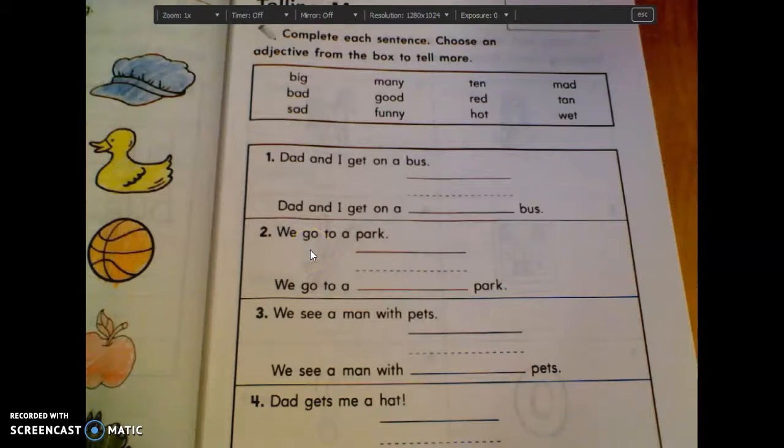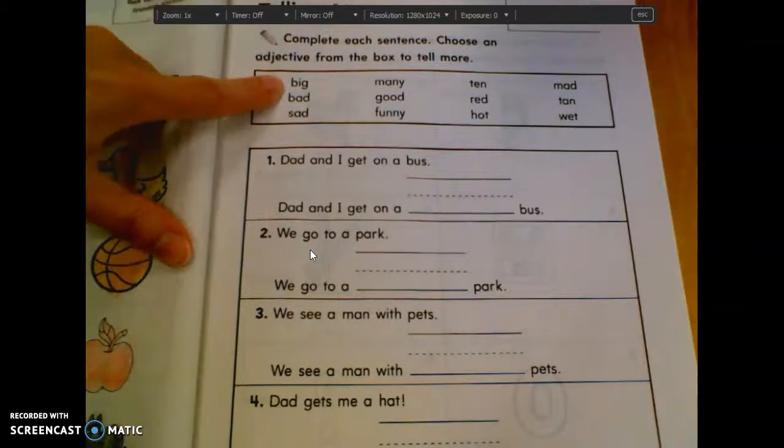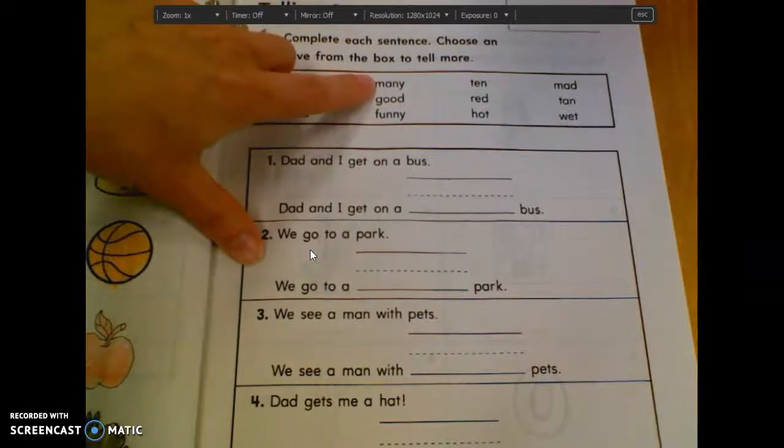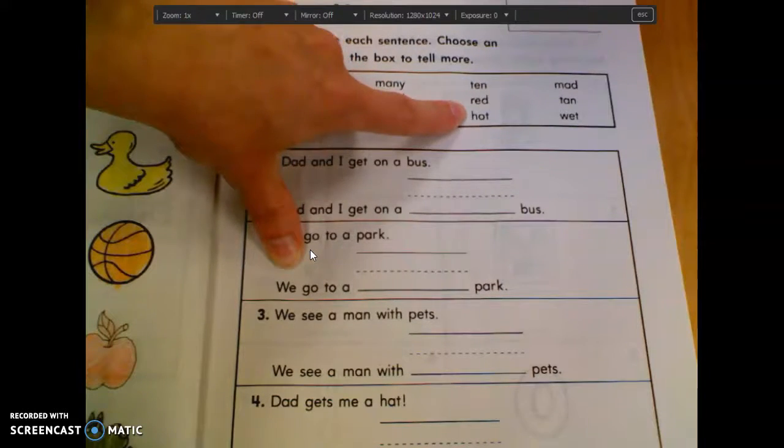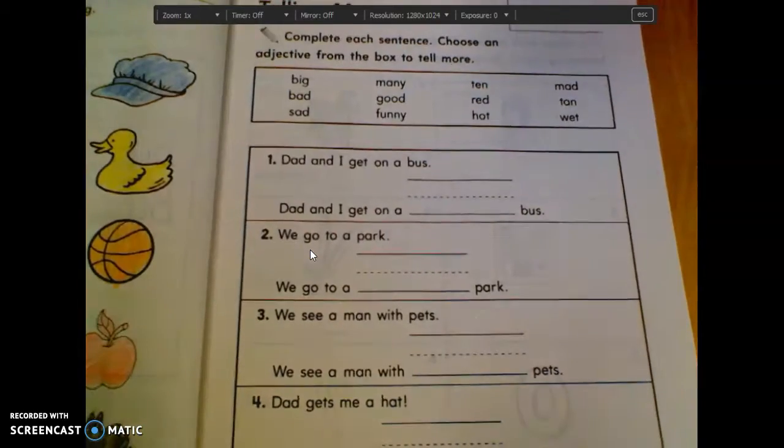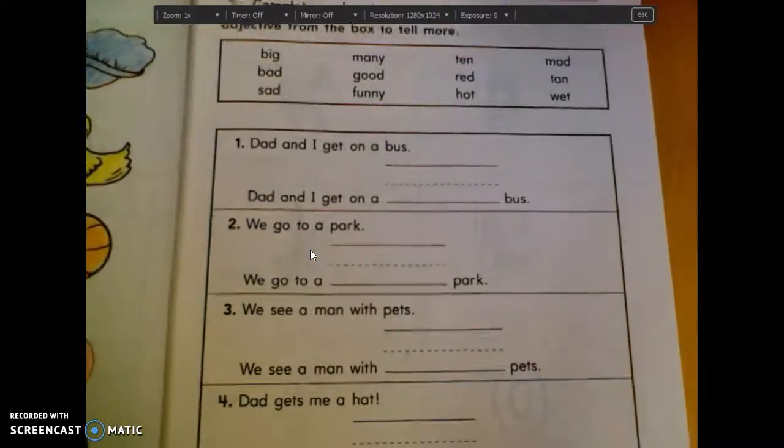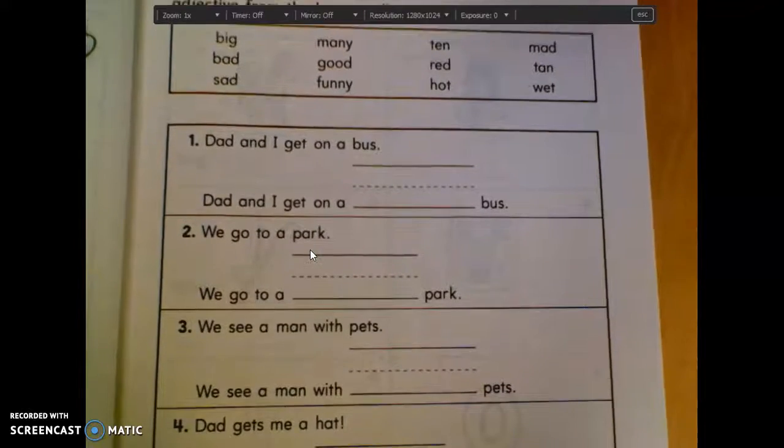Complete each sentence. Choose an adjective from the box to tell more. So we have big, bad, sad, many, good, funny, ten, red, hot, mad, tan, wet. Those are all adjectives. They're all describing words. So we're going to find, read these sentences, and then put them in the sentence that they should go in.